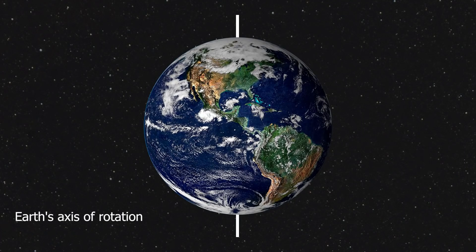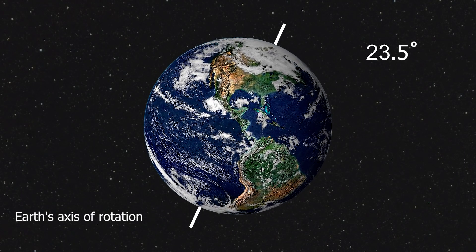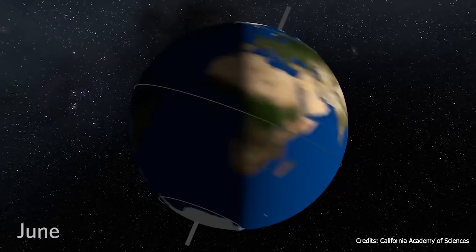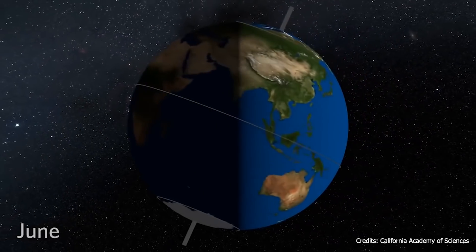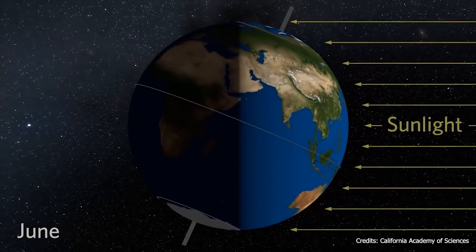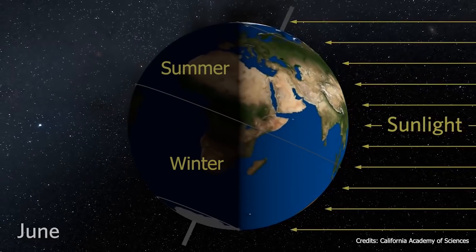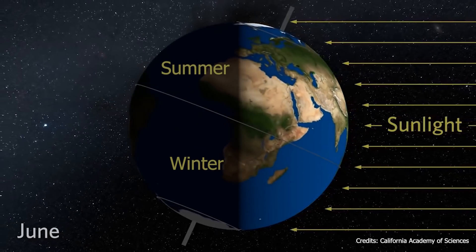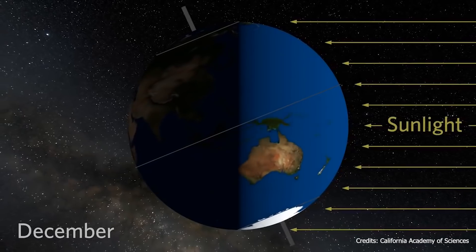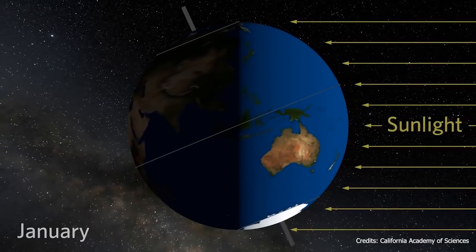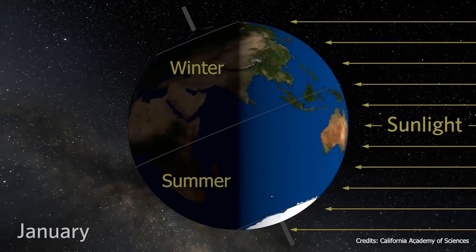The real reason behind the changing of the seasons is the Earth's axial tilt. When any of the two hemispheres is angled toward the sun, it receives more direct sunlight and experiences summer, and vice versa. When one of the hemispheres is angled away from the sun, it receives more indirect sunlight and experiences winter.